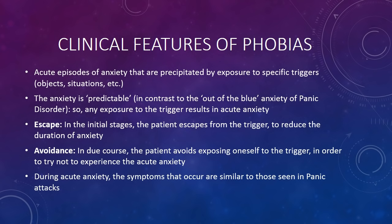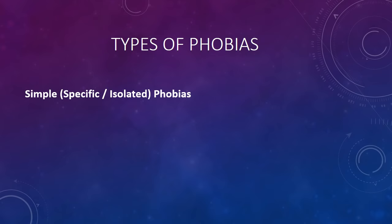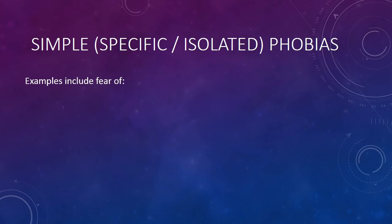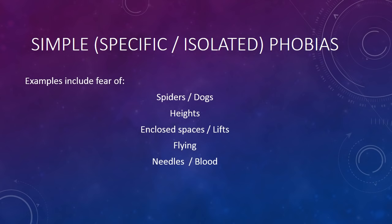During acute anxiety in phobias, the symptoms that occur are very similar to those seen in panic attacks. The main types of phobias are simple phobias (also called specific or isolated phobias), agoraphobia, and social phobia. Simple phobias include fear of spiders, dogs, heights, enclosed spaces, lifts, flying, needles, blood, dentists or hospitals, and fear of choking.